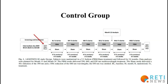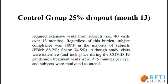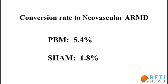Another important point related to methodology is that the randomization was 2 to 1. This really weakens the effect of the placebo group, especially in a study that included only 33 patients in the control group. Considering that 148 eyes were included in a 2 to 1 randomization, about 50 eyes were in the placebo group. However, there was a dropout of 25%, and the control group ended up with fewer than 48 eyes in the 13-month analysis. The conversion rate from the dry form to the wet form was 5.4% in patients undergoing photobiomodulation versus 1.8% in the placebo group.